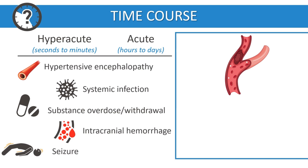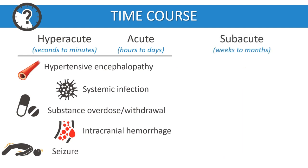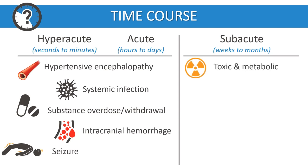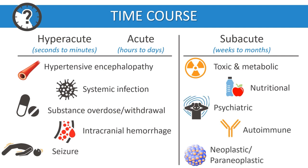Ischemic strokes can also cause acute encephalopathy. Patients with infarcts affecting areas such as the bilateral paramedian region of the thalamus or brainstem can sometimes present with encephalopathy. Subacute encephalopathy is often due to toxic and metabolic derangements, nutritional deficiencies, psychiatric illness, or autoimmune, neoplastic, or paraneoplastic conditions.